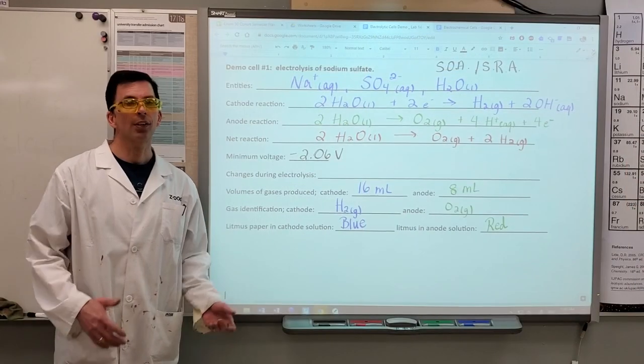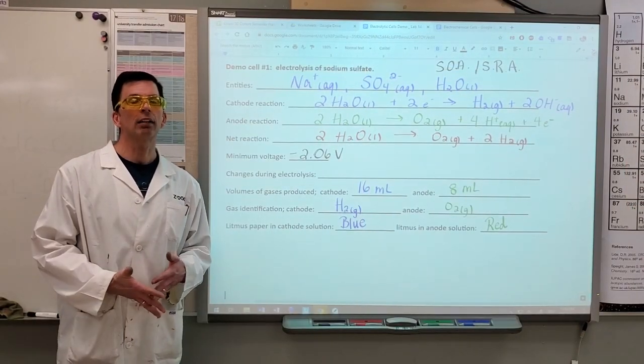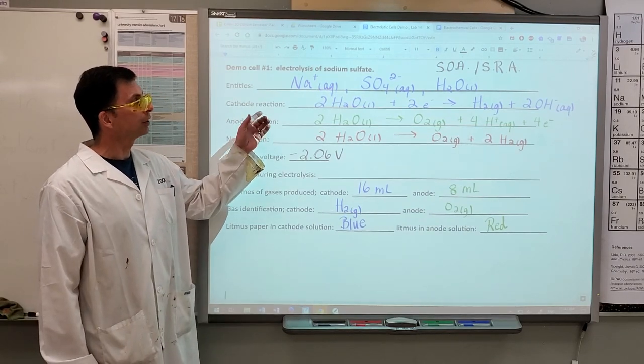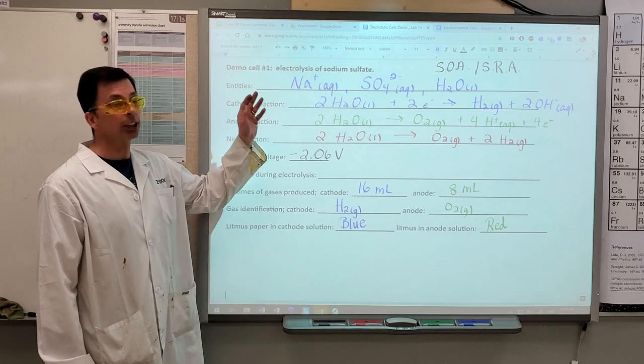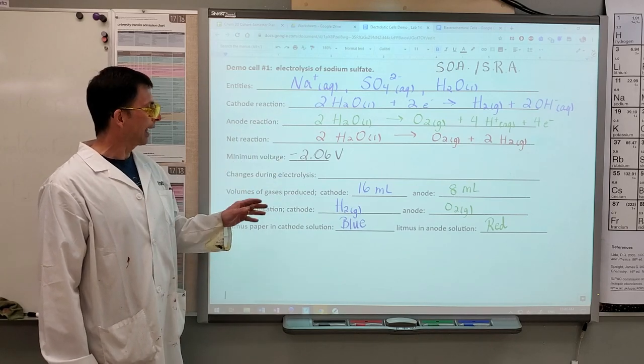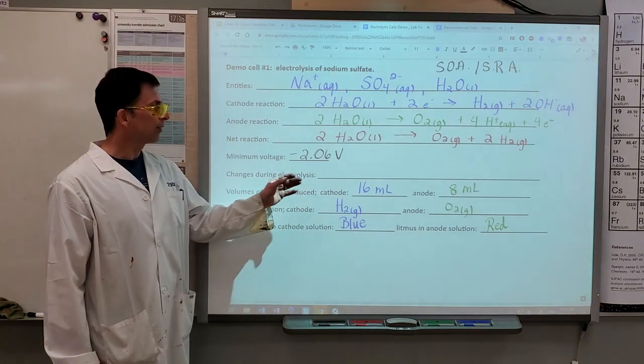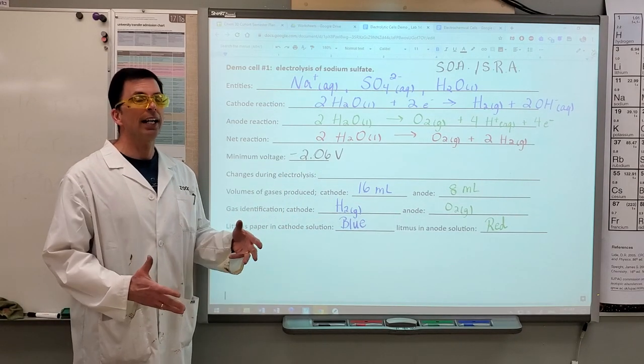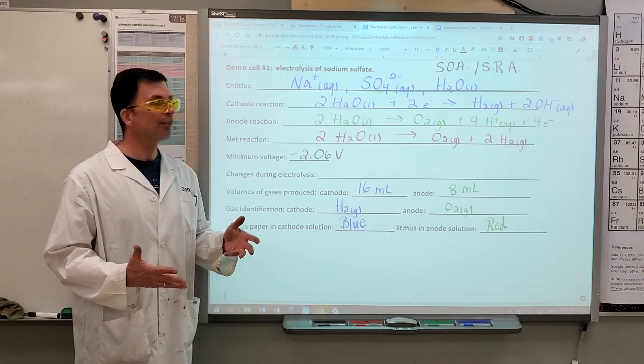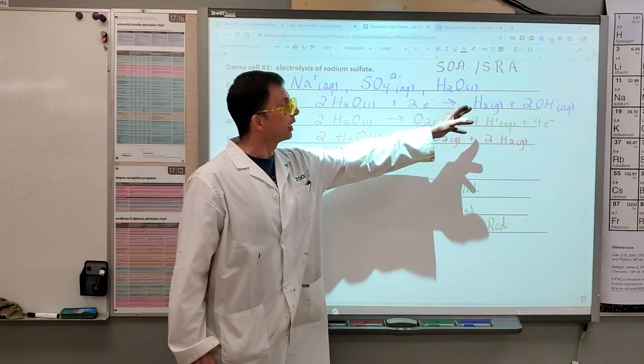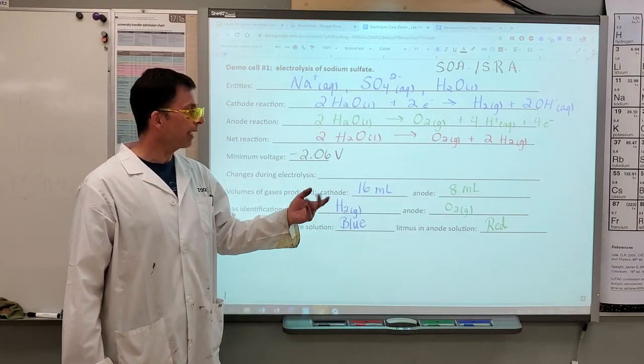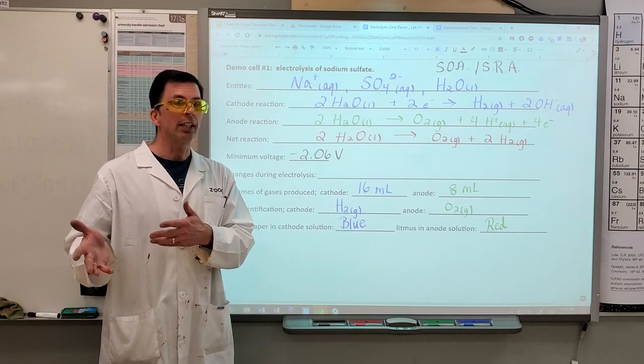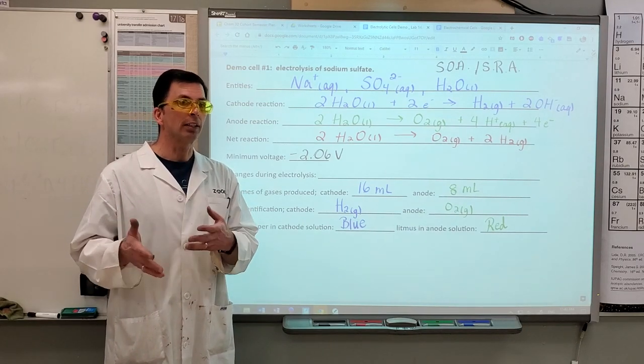So in summary, we made an electrolytic cell containing sodium sulfate. The cathode half-reaction featured the reduction of water. At the cathode, we had 16 milliliters of hydrogen gas produced. We verified hydrogen gas via the POP test. We verified the production of hydroxide ion, a base. Seeing how the bromothymol blue indicator appeared blue and red litmus turned blue.